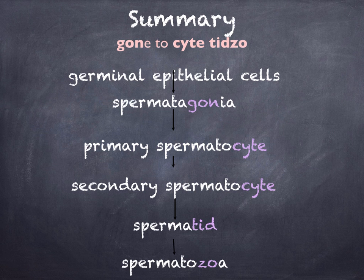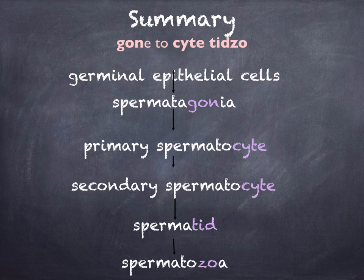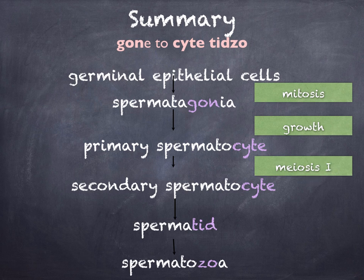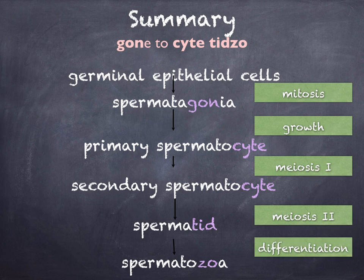To remember all these terms, think of the acronym GON2-site TIDZO. In order: germinal epithelial cells undergo mitosis to form spermatogonia (GON), which form primary spermatocytes, secondary spermatocytes, spermatids, and spermatozoa. Mitosis occurs between the epithelial cells and spermatogonia, followed by growth, meiosis 1, meiosis 2, and differentiation.